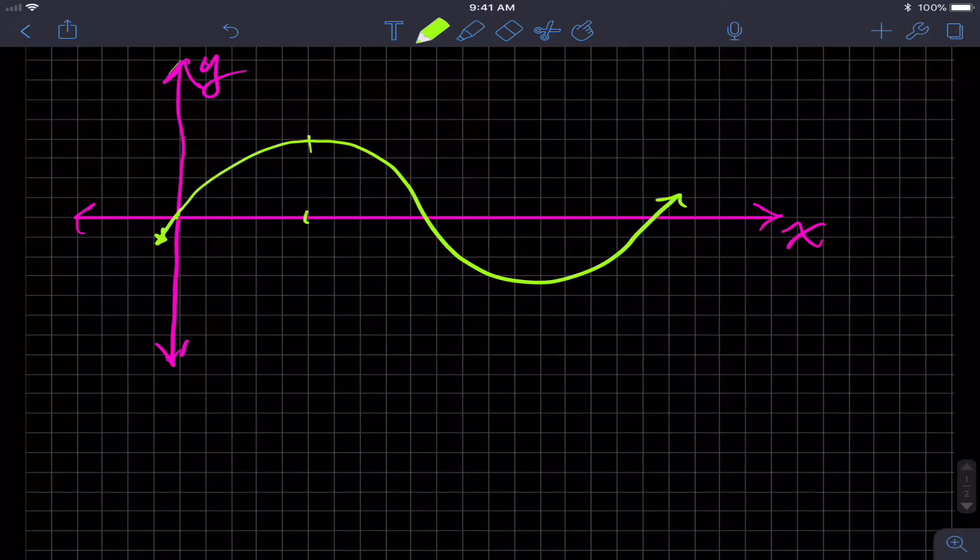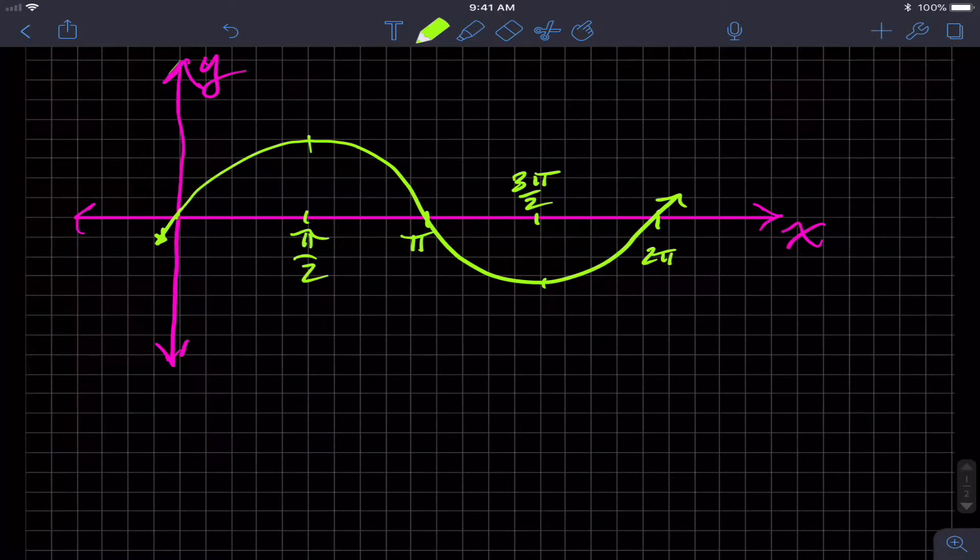This value, that peak, is at pi over two. This value is at pi. This trough for least value, least local value, is at three pi over two. And this value is at two pi. And of course, it continues and repeats. And when we get to four pi, we'll be at this similar point as well, because four pi is coterminal angle with two pi. And this point here is zero.